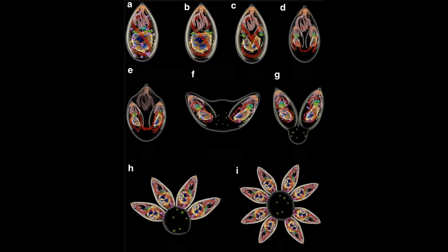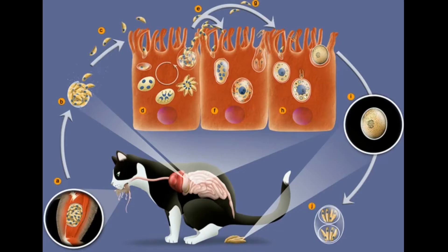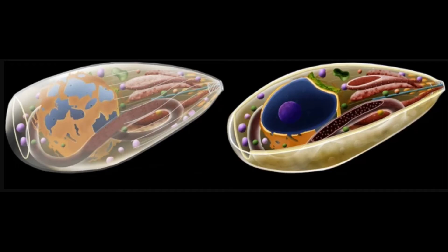Infection can spread through contaminated dirt and water, fruits and vegetables, undercooked meat, organ transplant, blood transfusions, and cat feces. This parasite enters the bloodstream once ingested. When a person has a healthy immune system, it prevents them from acquiring further infection.